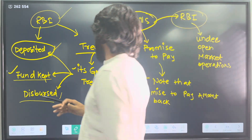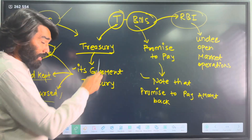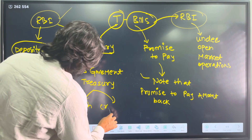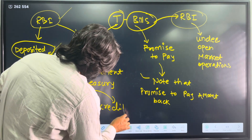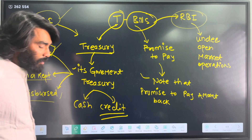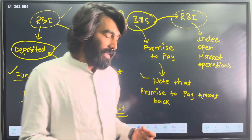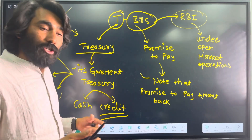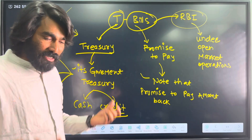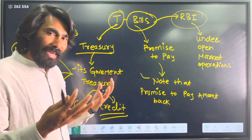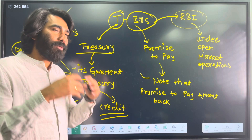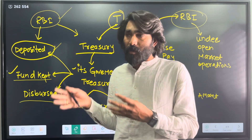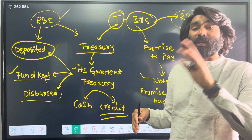Sometimes you see cash-based activities and sometimes credit-based activities. When we talk about issuance of T-bills, if the government needs immediate funding, the government treasury department issues short-term T-bills to the public or institutional investors to raise capital. Once issued, common public, high-net-worth individuals, or institutional investors participate, purchase them, and the government receives funds.